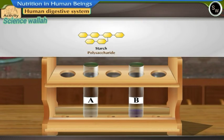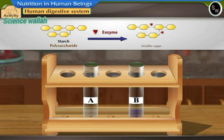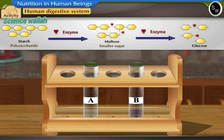Because of the digestion, starch is broken down to smaller sugar units gradually, first to maltose and then to glucose.